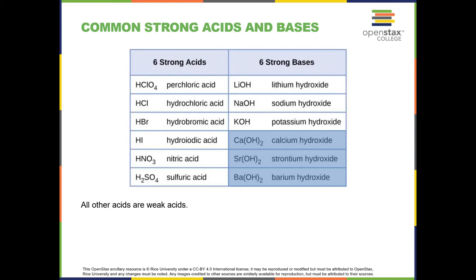For strong bases, these are substances that dissolve to form hydroxide. Lithium will dissolve to form Li⁺ and OH⁻, so you get hydroxide in solution. Sodium and potassium behave the same way, so Group 1A metal hydroxides are strong bases. Calcium hydroxide, strontium hydroxide, and barium hydroxide are also strong bases.